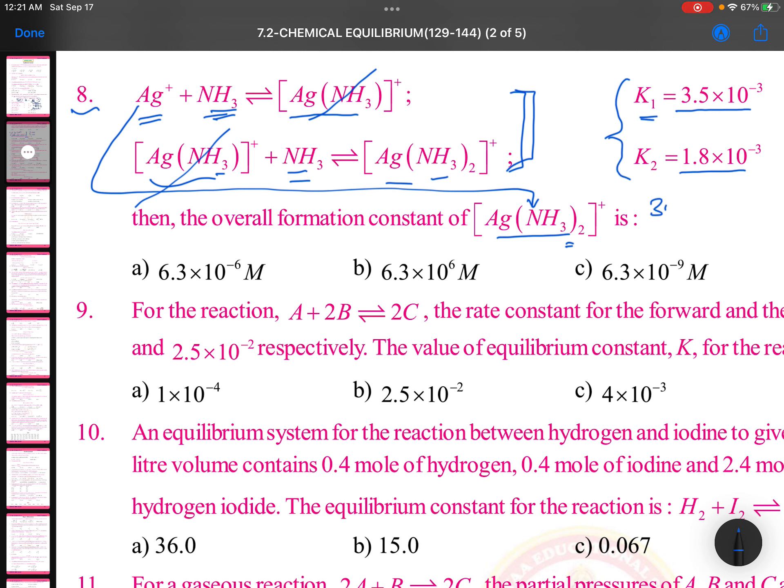the right answer is 3.5 into 10 to the power of minus 3 into 1.8 into 10 to the power of minus 3. When you multiply these two you will get the answer. Just multiply these two: K equals K1 into K2. Thank you for sharing this, that's what we need to do.